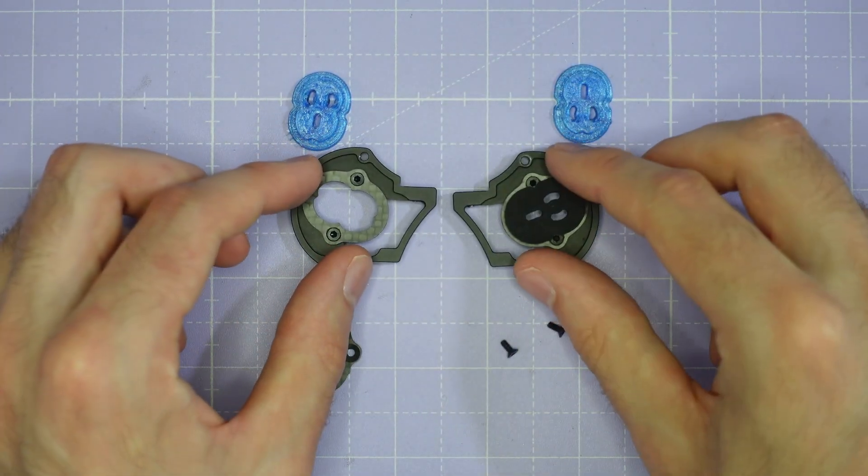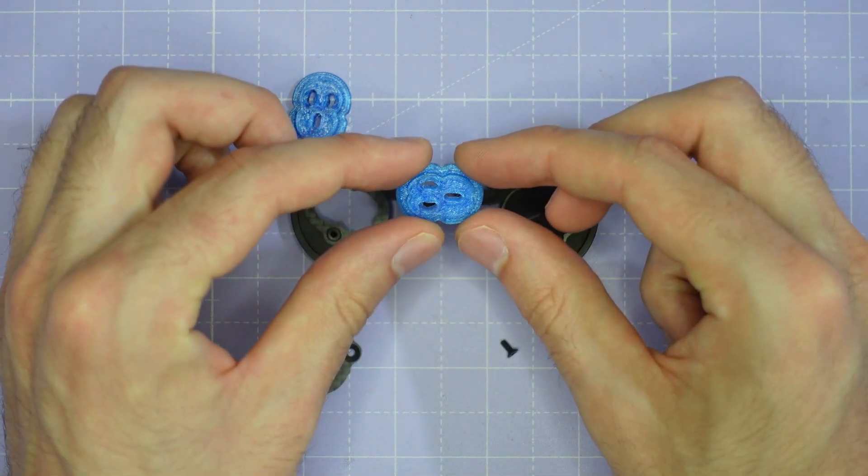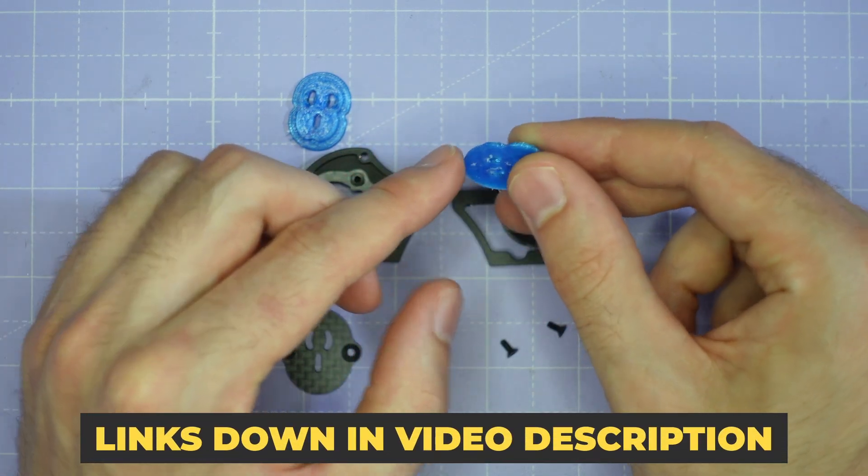You can also if you want a harder or a firmer soft mount you can also use these TPU gummies. STL files for these are available in the links in the video description.